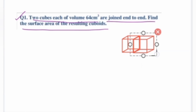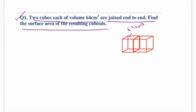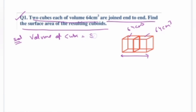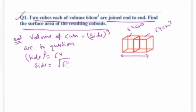We have two cubes, both with volume 64 cm³, placed end-to-end. The resulting shape is a cuboid. Volume of cube = side³ = 64 cm³. So side³ = 64, and the cube root of 64 is 4. Therefore, the side of each cube is 4 cm.